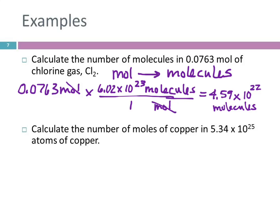So that's going one direction. Let's look at the second one. Calculate the number of moles of copper in 5.34 times 10 to the 25th atoms of copper. So here we're given atoms, and we're asked for moles. So we're going to convert atoms to moles. So we write down the number of atoms, 5.34 times 10 to the 25th atoms.